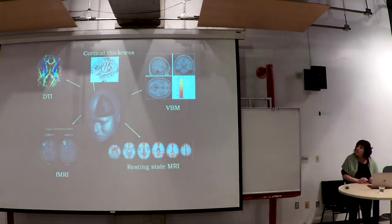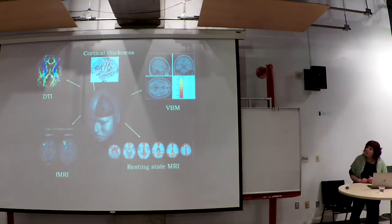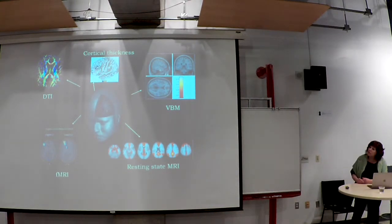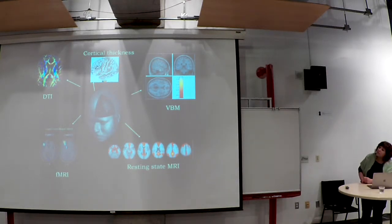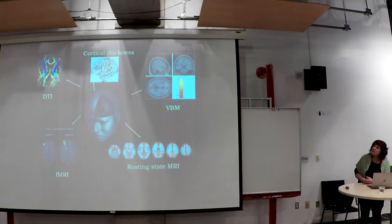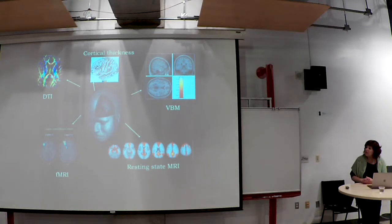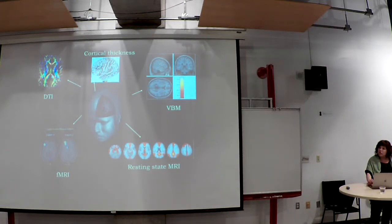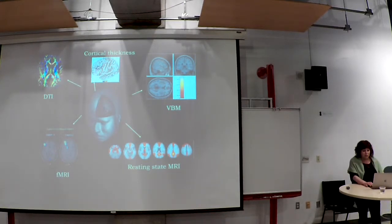There are multiple ways of measuring the brain. Some relate to brain structure — for example DTI (diffusion tensor imaging), cortical thickness, and VBM (voxel-based morphometry). These allow us to look at white matter tracks, gray matter density differences, and shape differences in the brain. Functional measures like fMRI and resting state MRI allow us to look at brain function by identifying regions active during tasks, or at resting state connectivity patterns. These are the methods I'll be using to address these questions.